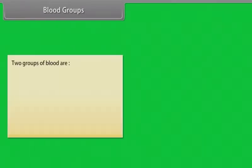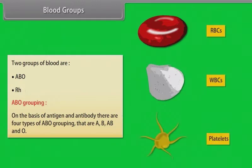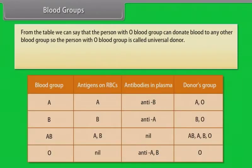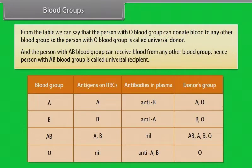There are two groups of blood: ABO and RH. On the basis of antigen and antibody, ABO grouping has four types: A, B, AB, and O. A person with blood group O can donate blood to any group, making them the universal donor. A person with blood group AB can receive blood from any group, making them the universal recipient.